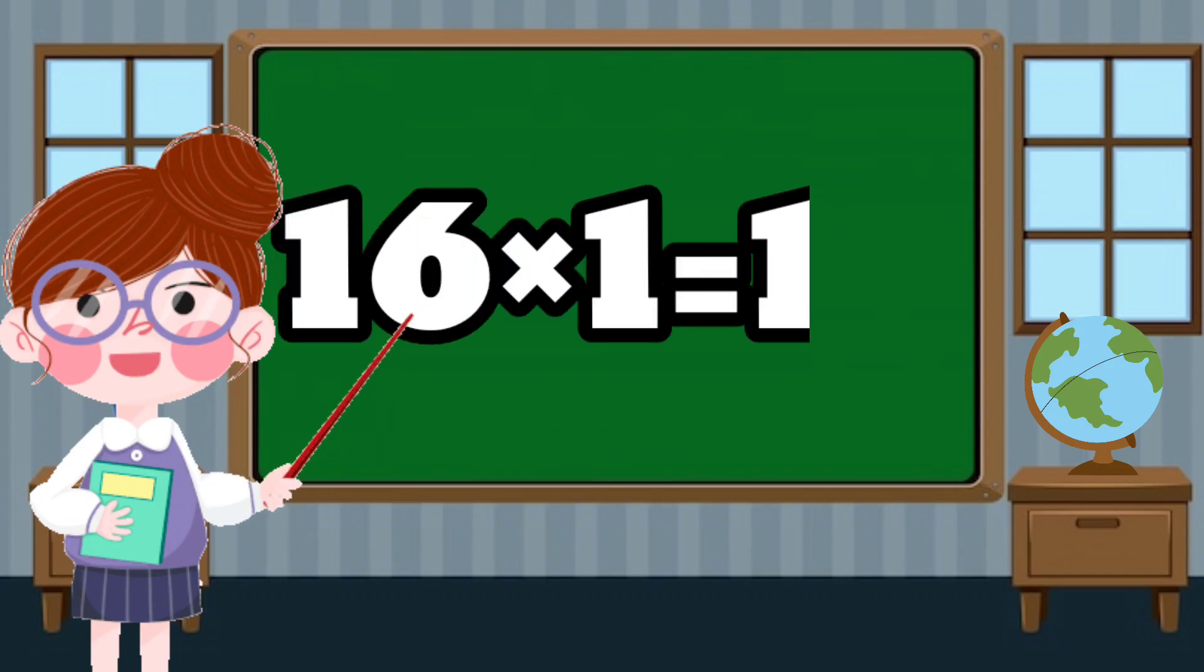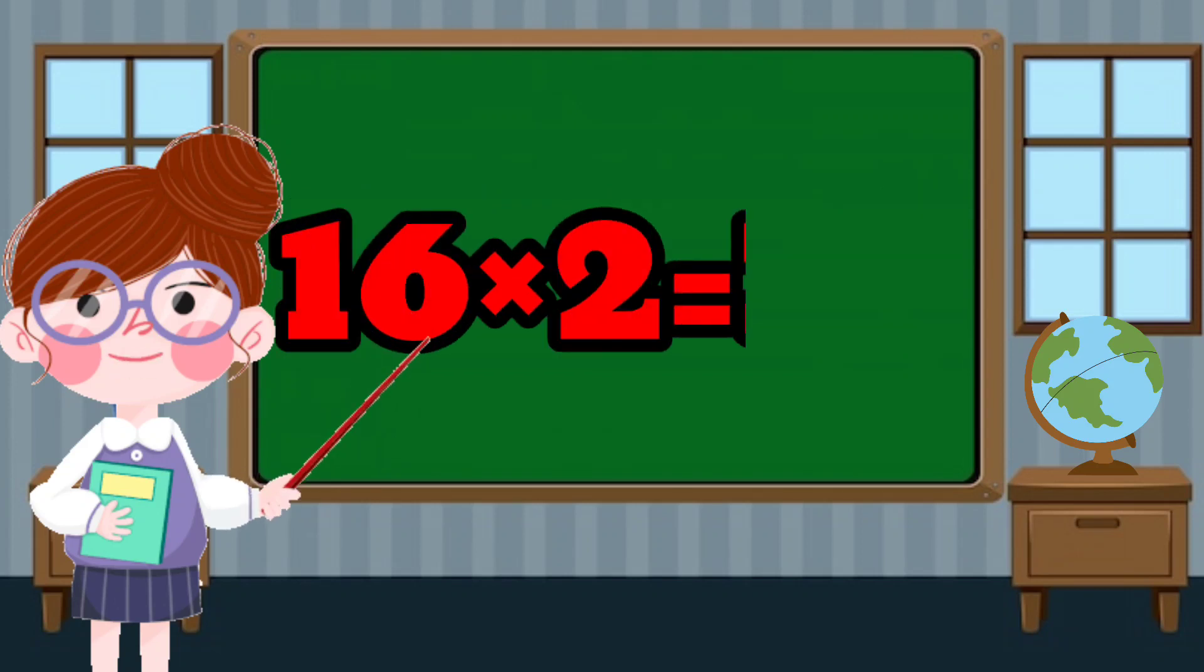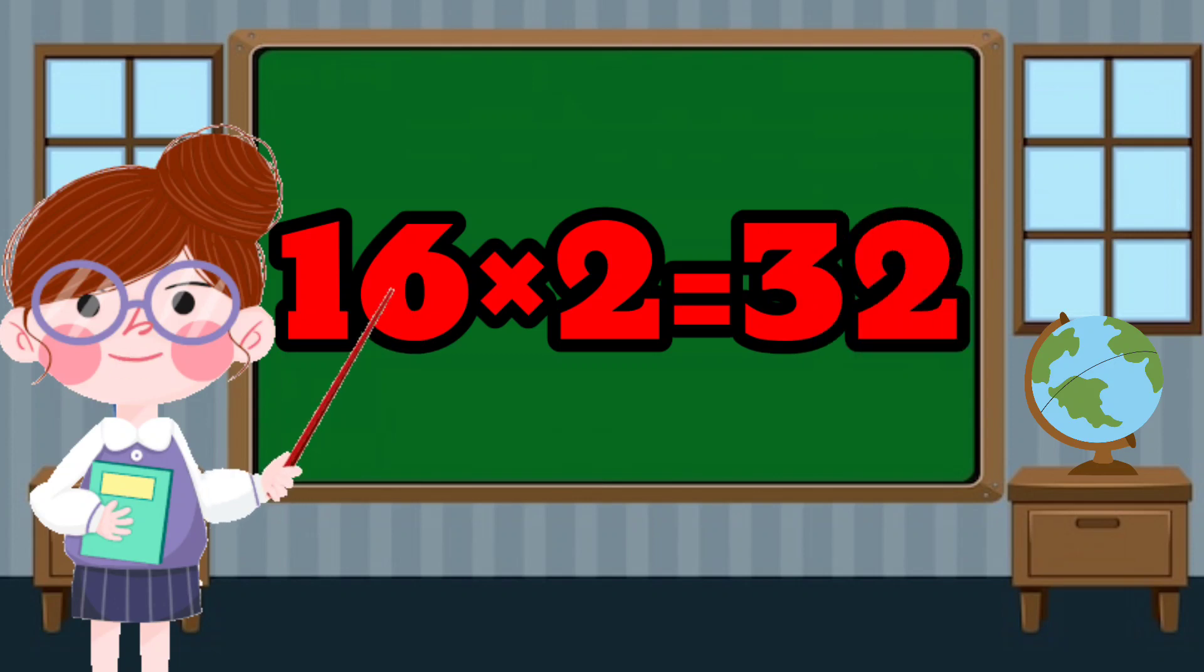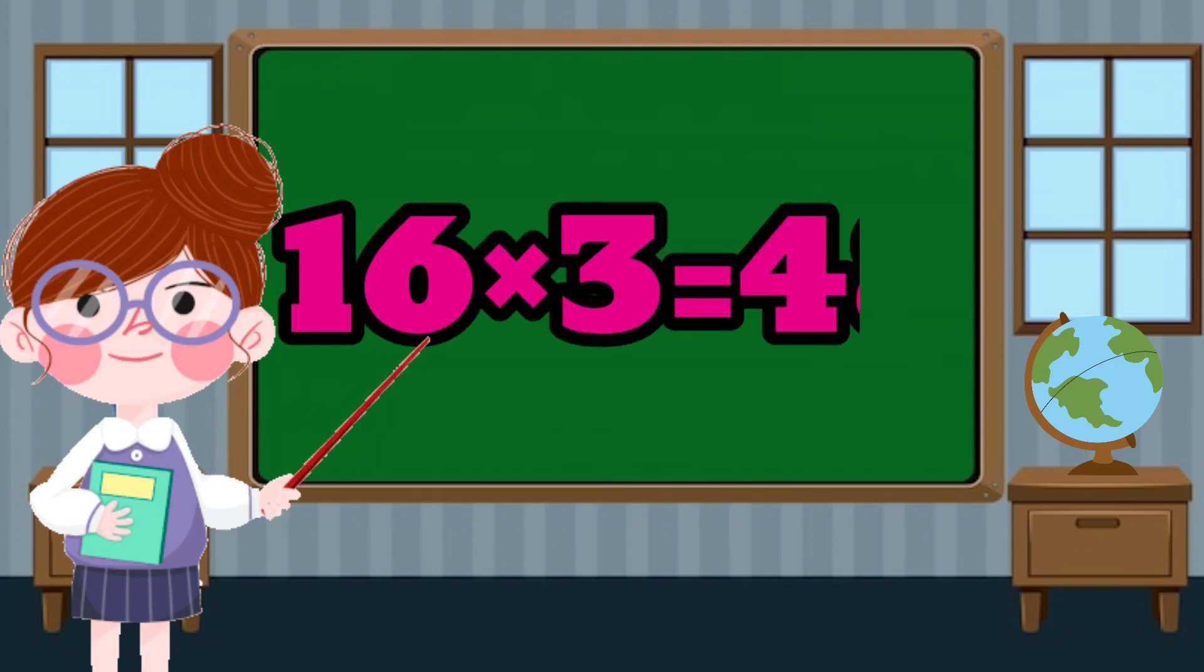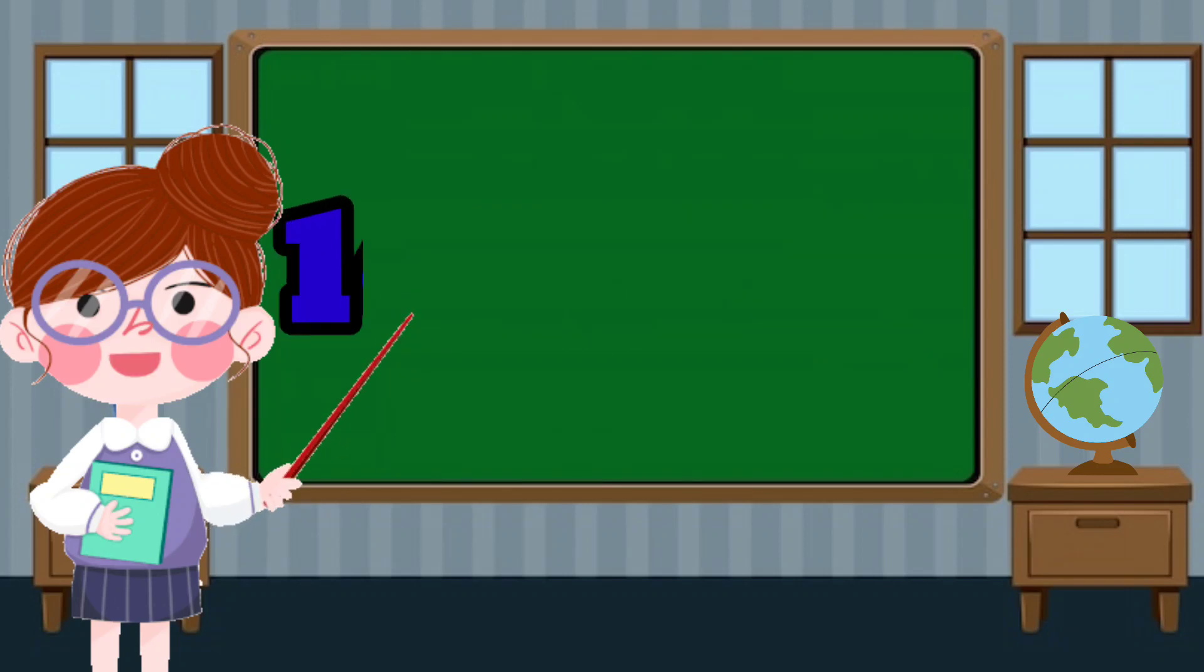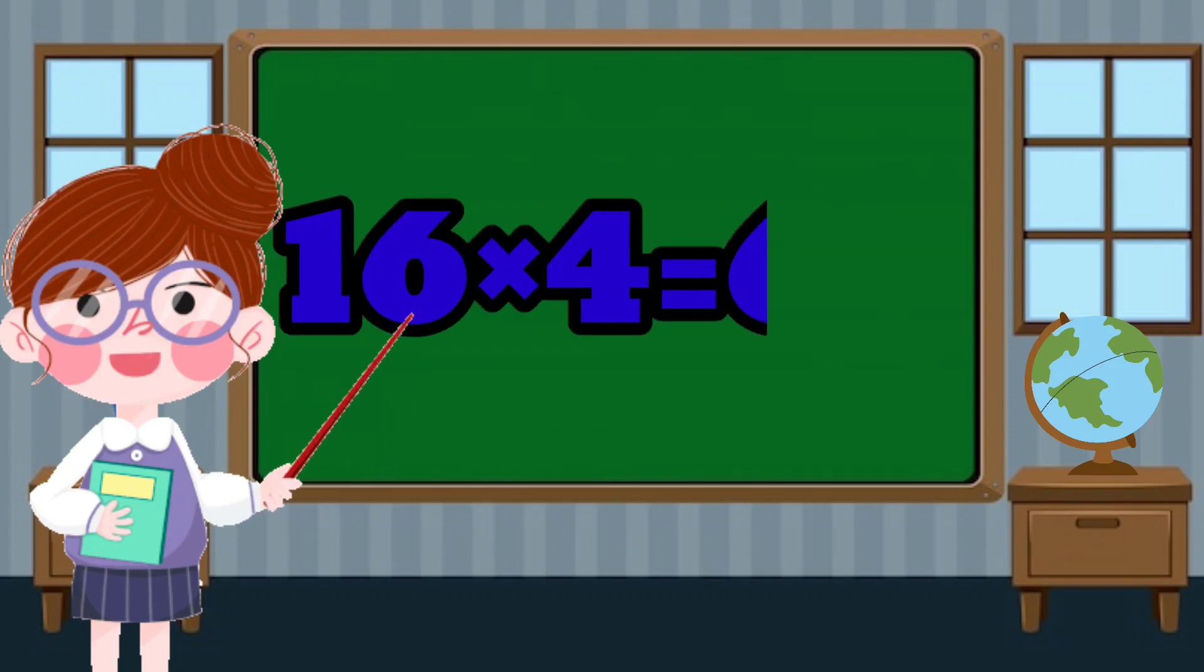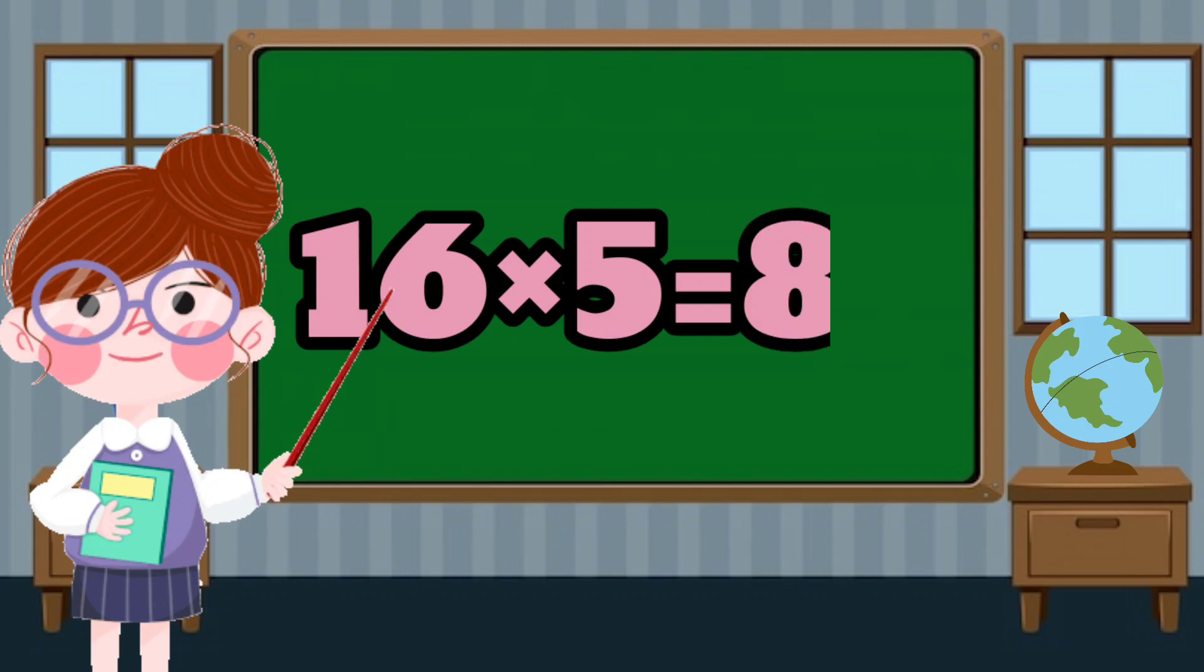16 times 1 equals 16. 16 times 2 equals 32. 16 times 3 equals 48. 16 times 4 equals 64. 16 times 5 equals 80.